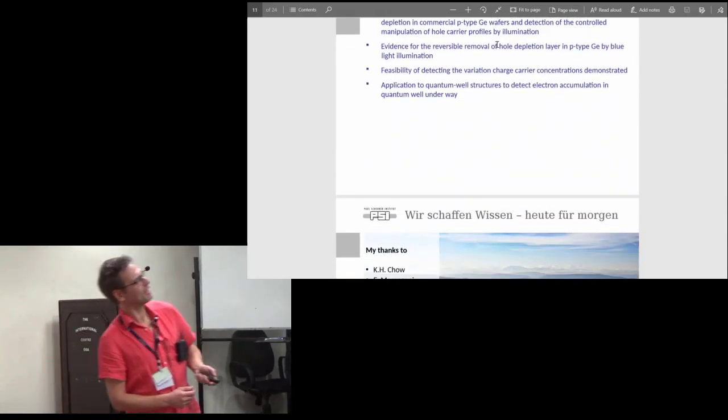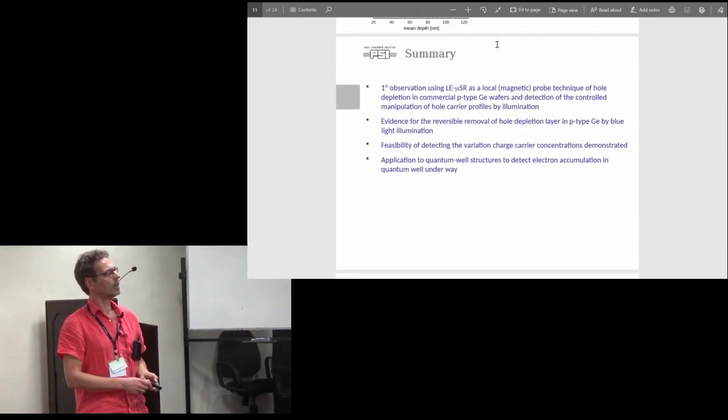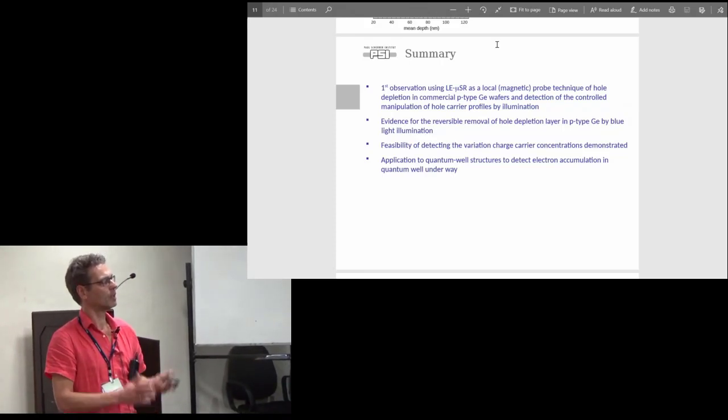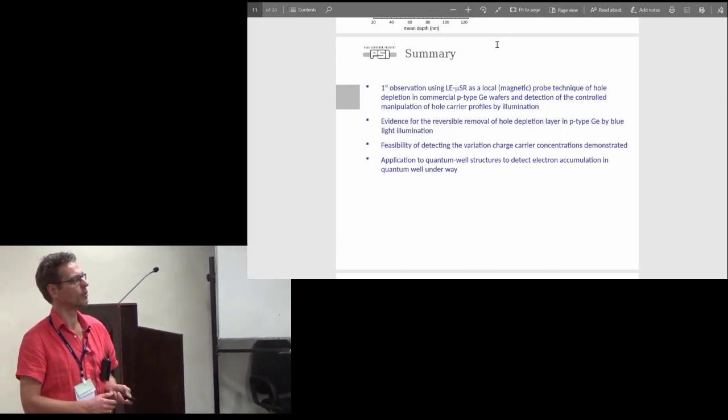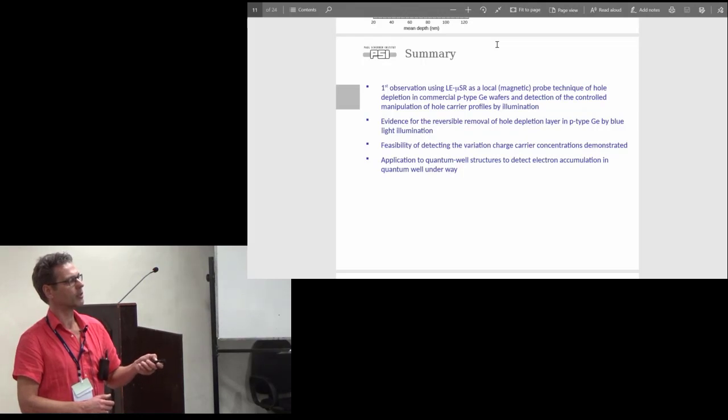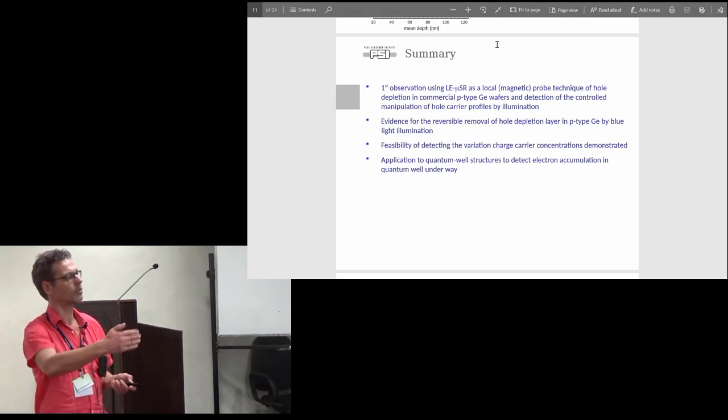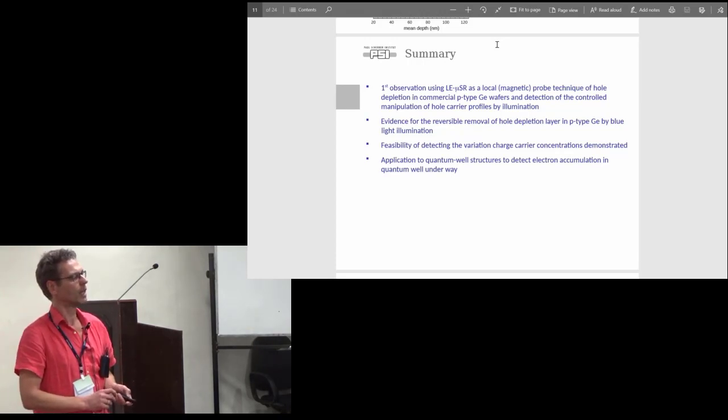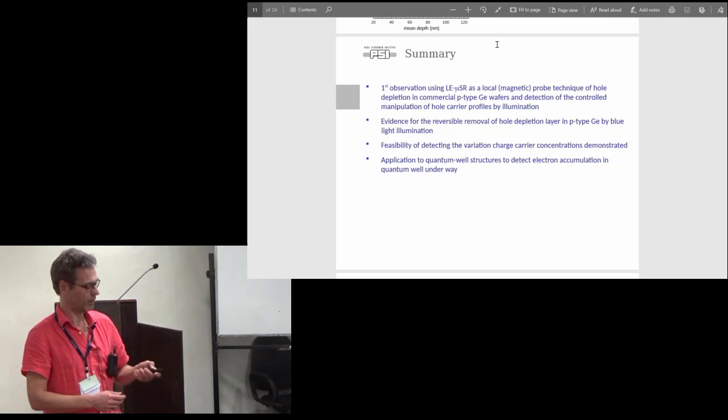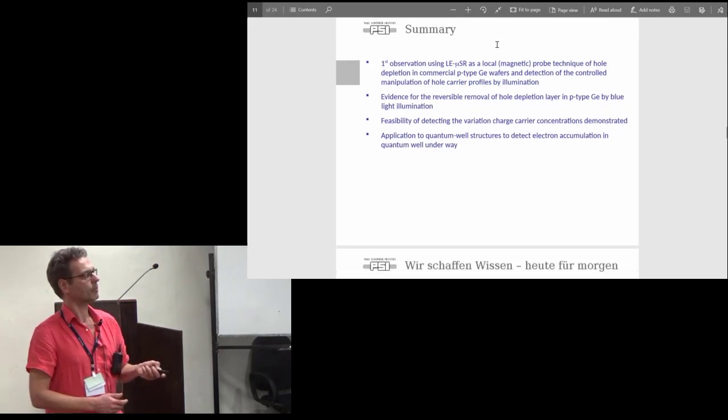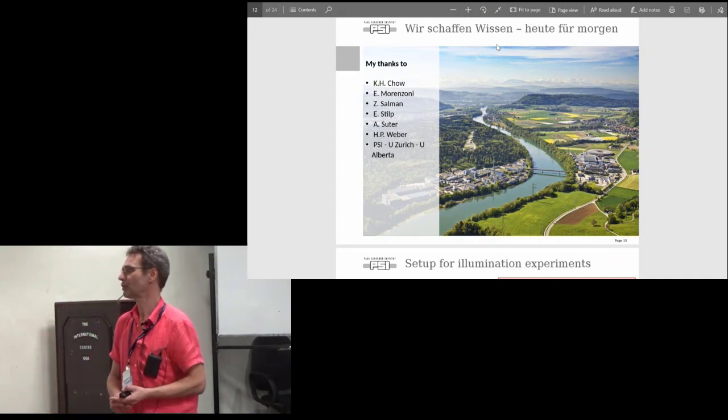To summarize, we use low energy muons as a local magnetic probe to detect for the first time a depletion layer in commercial p-type wafers. We can persistently remove this hole depletion by blue laser illumination. We can detect the variation of charge carrier concentrations, and now we have applications to quantum well structures where you can see the electron accumulation. We can try to modify these depletion layers by applying electric fields and so on. The first step is done, and I'd like to thank my collaborators.